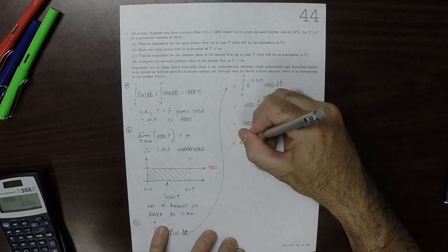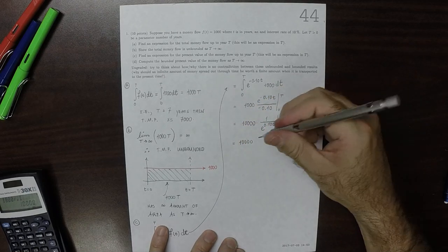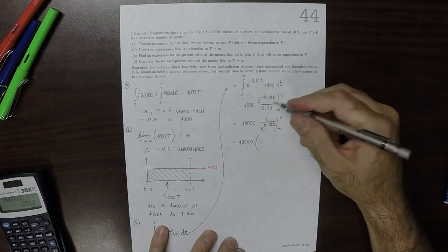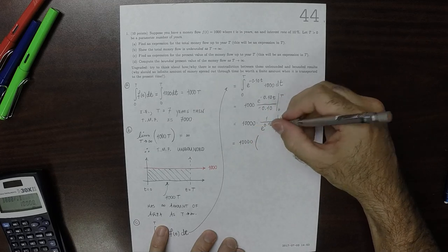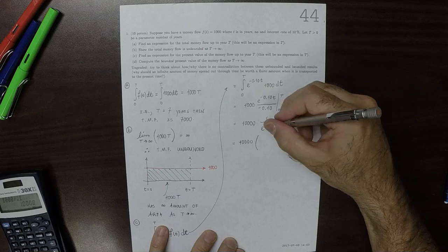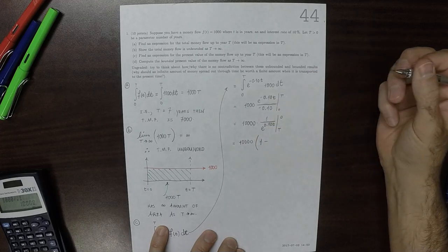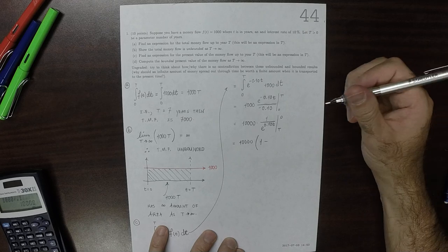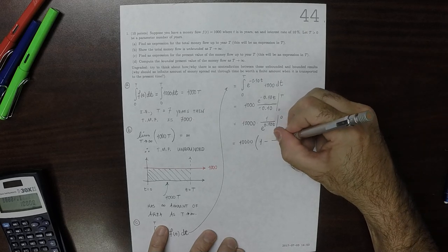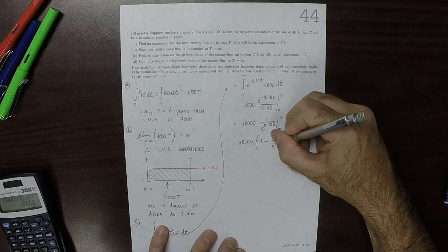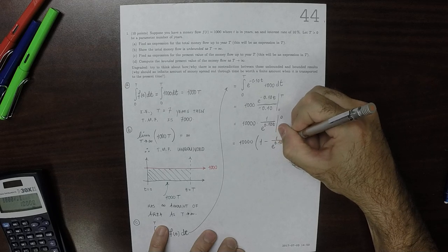So that's 10,000. And then when you plug in 0 into there, that's exponential of 0, which is 1, so that'd be 1 minus 1 over exponential of 0.10 big T.